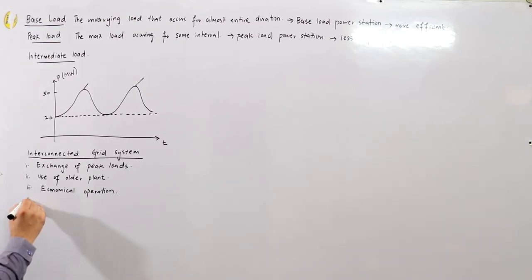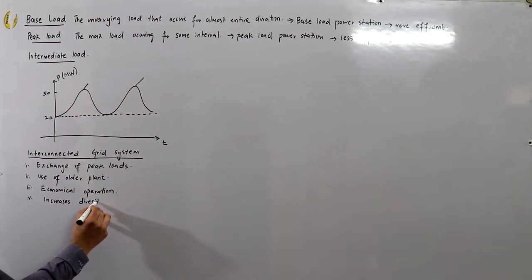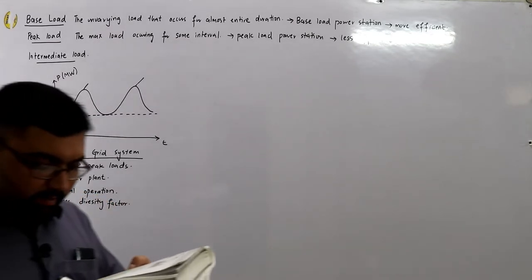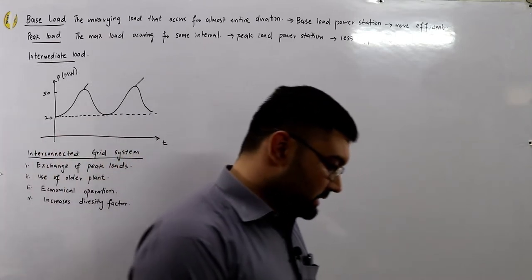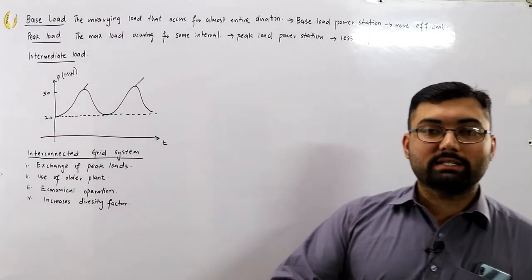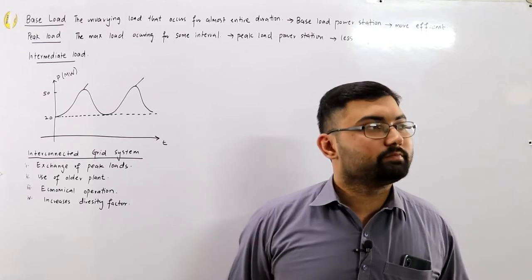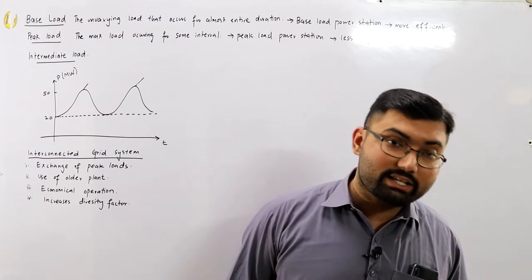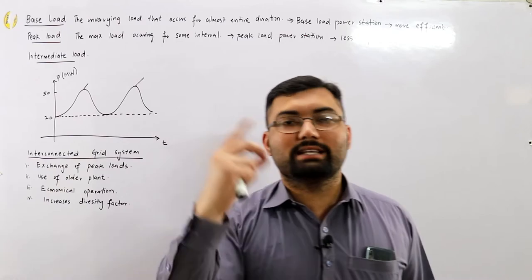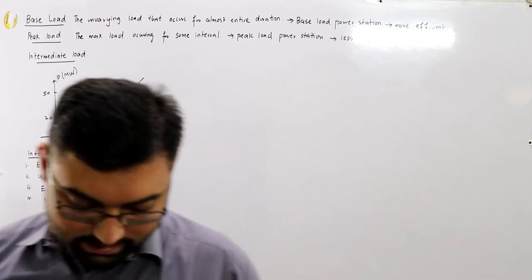The fourth benefit is that it increases the diversity factor. The maximum demand on the system is much reduced because the system now has a very large number of generating stations, so the summation of maximum demand across the entire system is comparatively much less than individual systems.